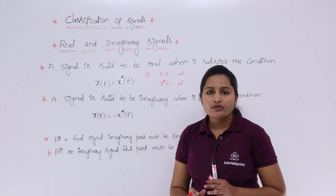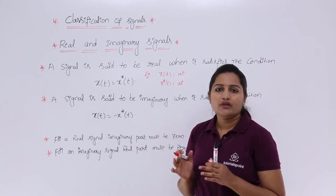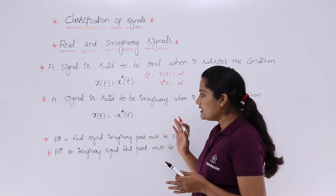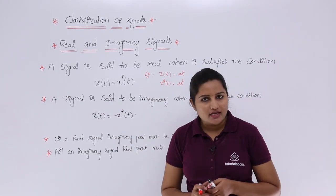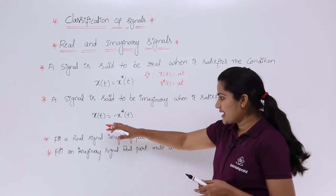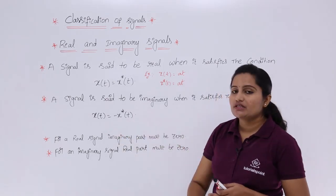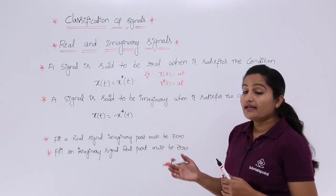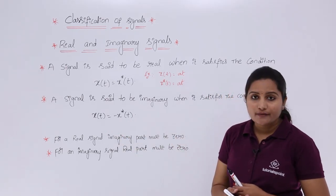Now we are going to see about an imaginary signal. A signal is said to be imaginary when it satisfies the condition x(t) = -x*(t).